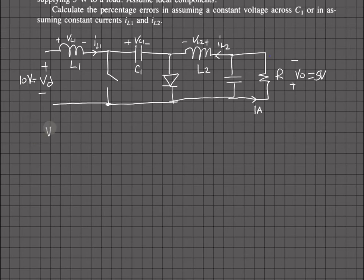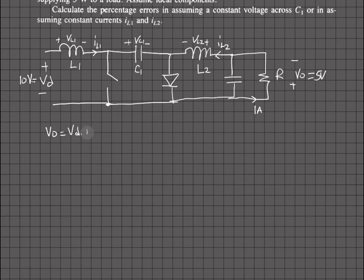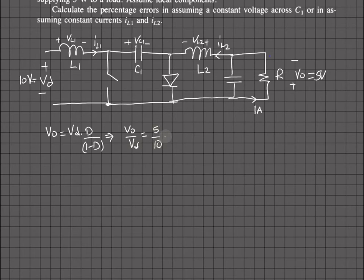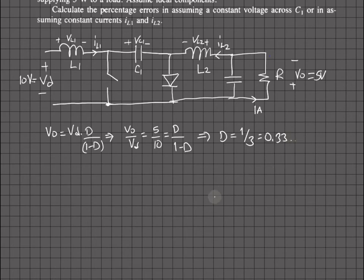V_out equals V_d times d divided by (1 minus d), so Vo/Vd equals 5/10, which equals d/(1 minus d). Therefore d equals 1/3, or approximately 0.33.